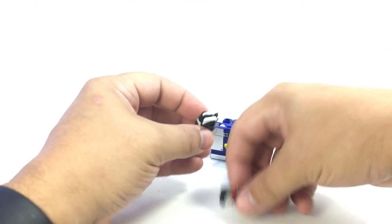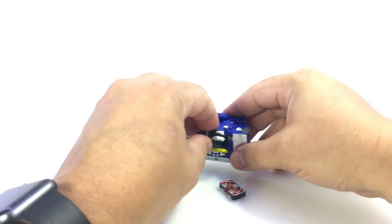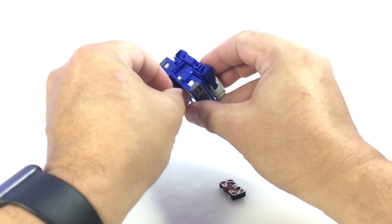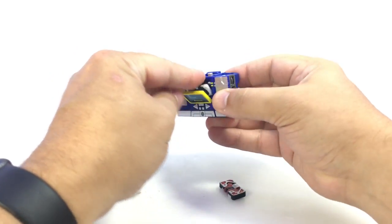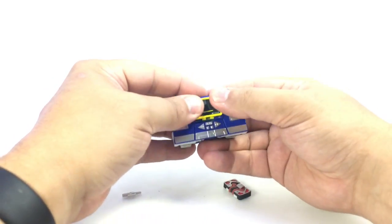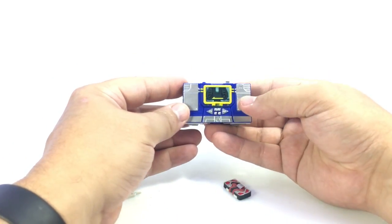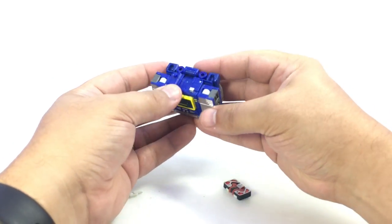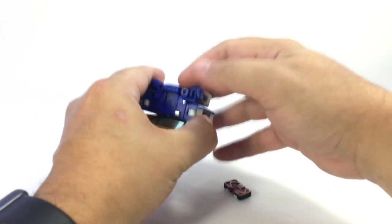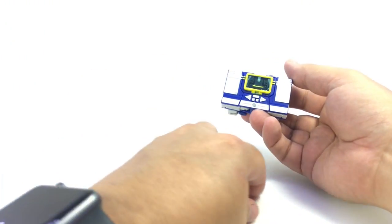But Ravage, even though he is thicker than the other cassettes, because of how he transforms, he will fit in the chest here. And you can store him in there and close it up all the way. Although he may not, we may have to poke him out later.